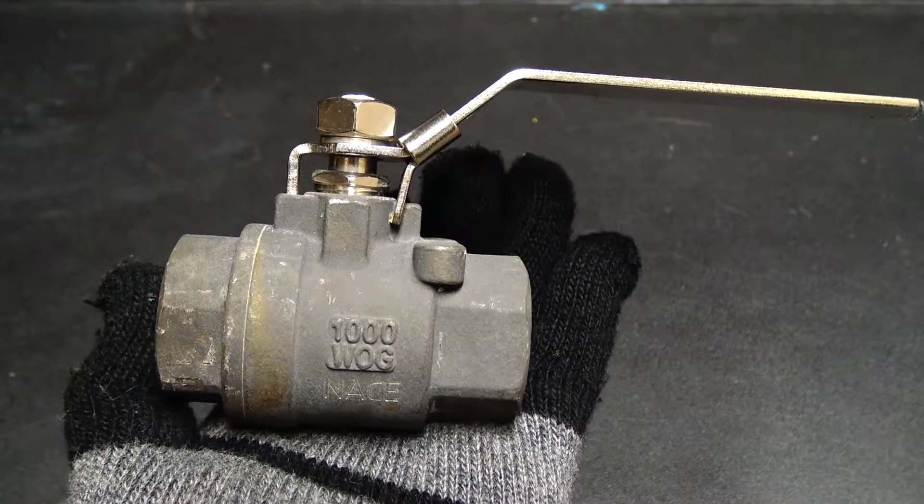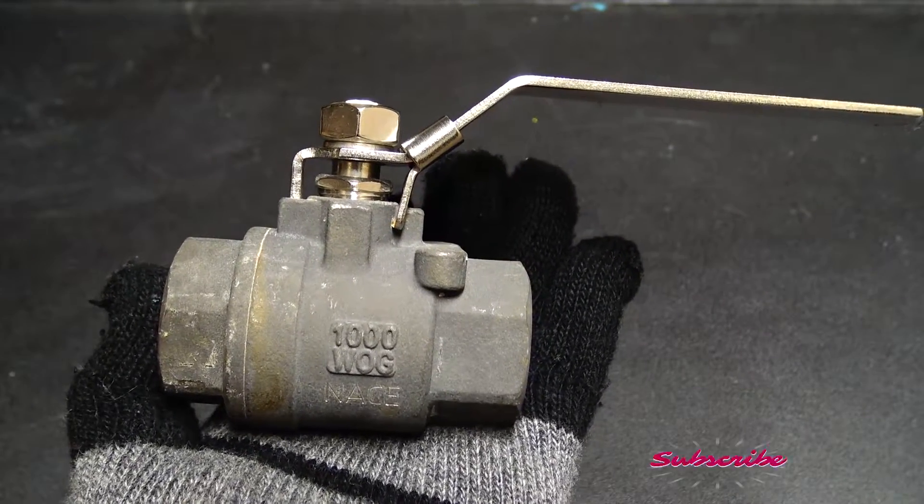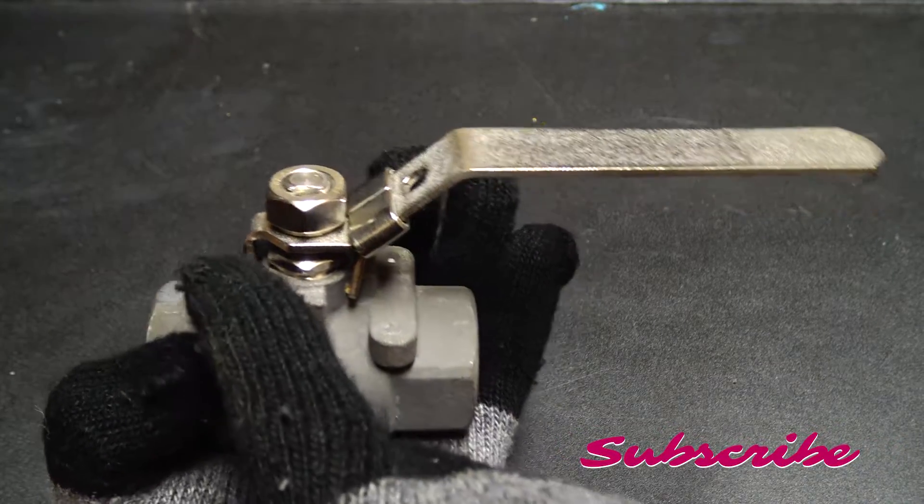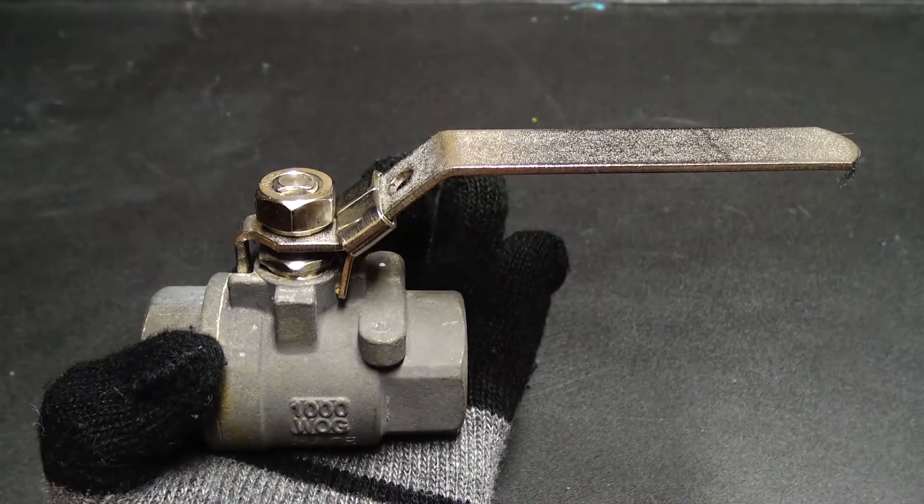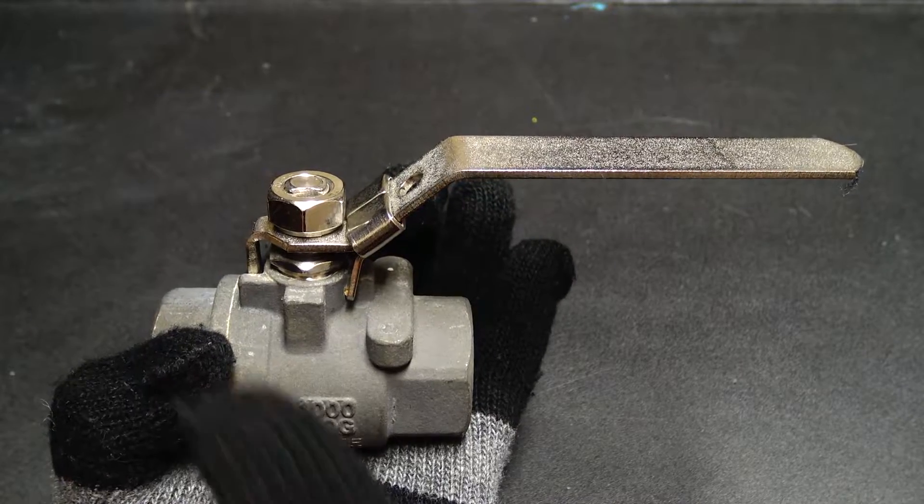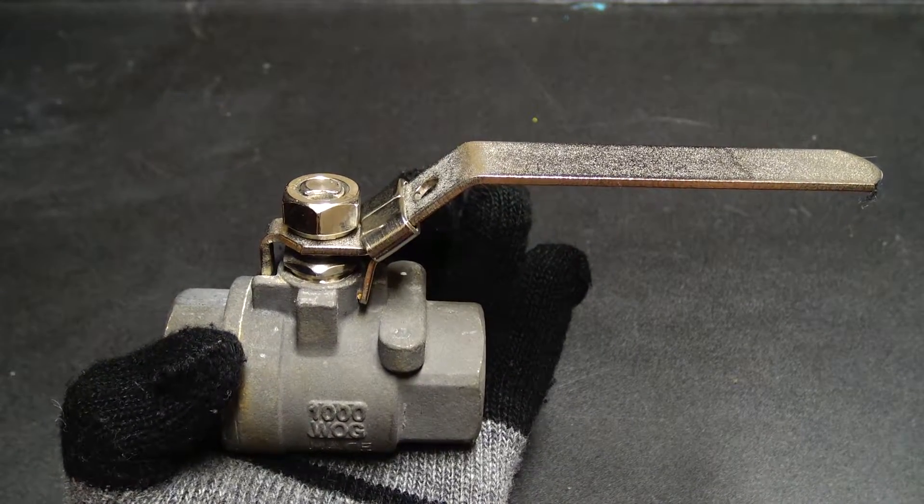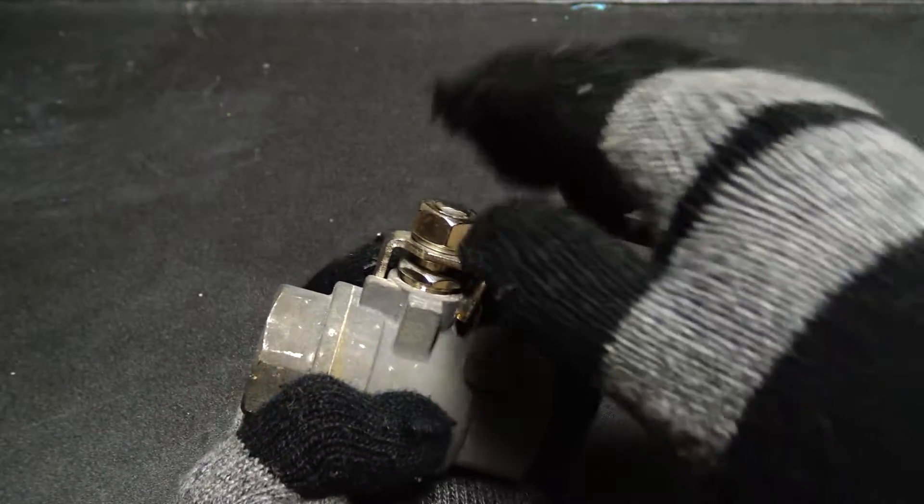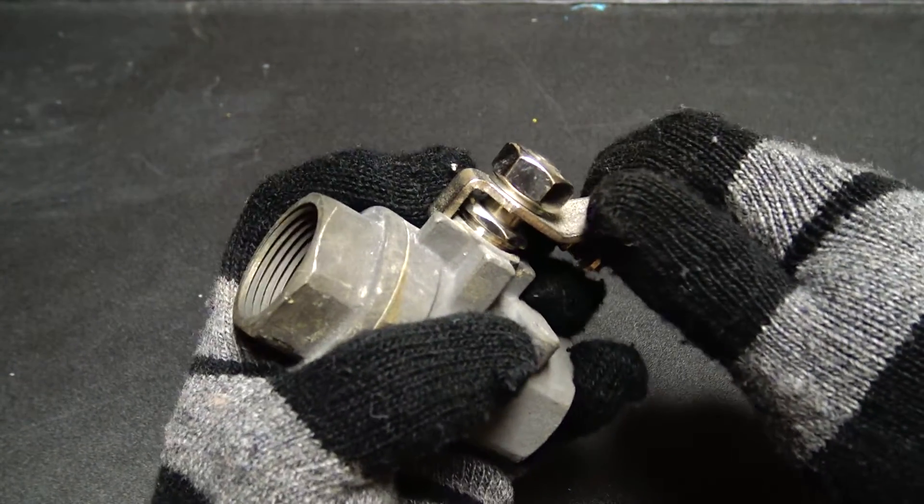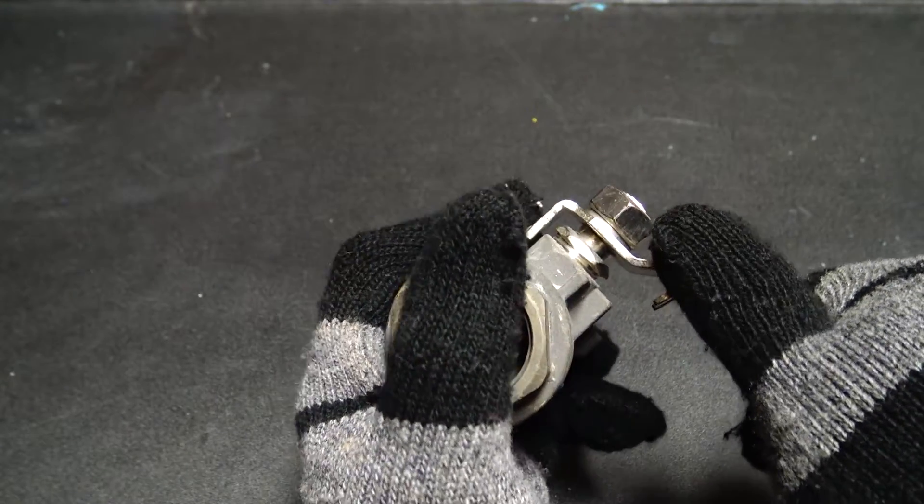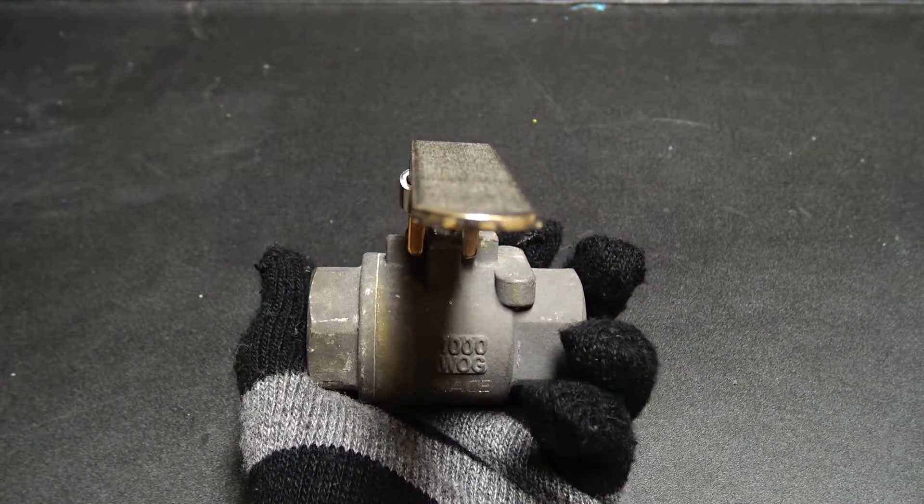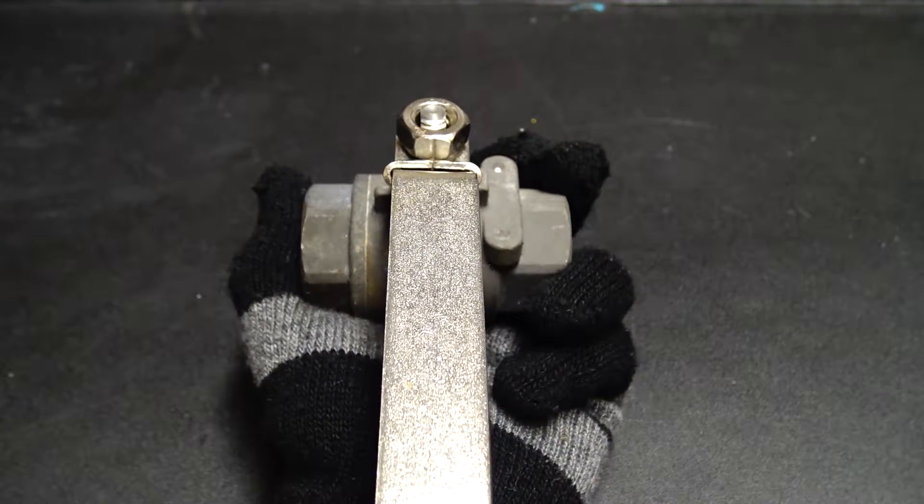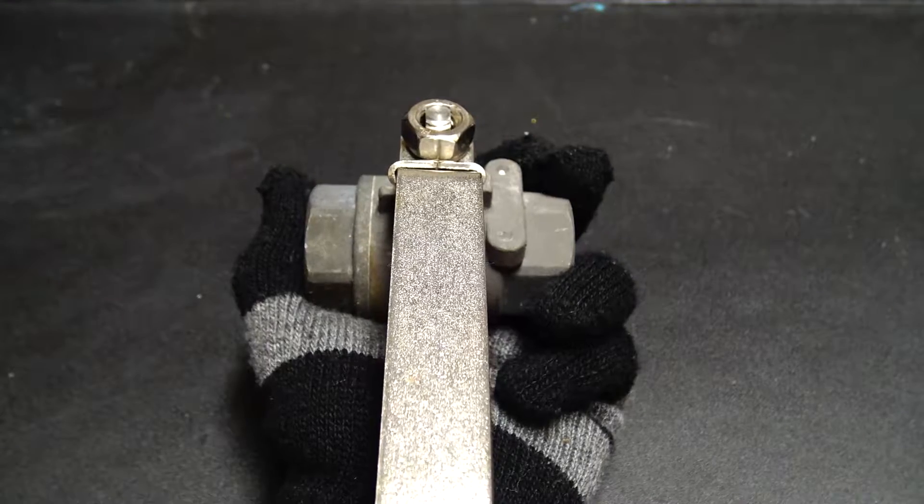One way you can tell if a valve is open or closed just by looking at it is the orientation of the lever. This position indicates that the valve is open. When it is closed, the orientation is different. It is not parallel with the valve.